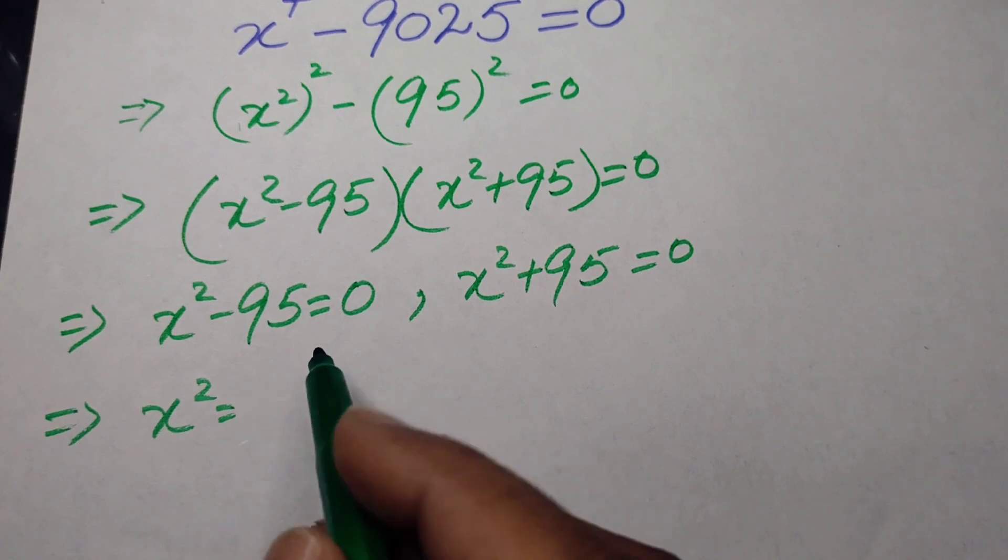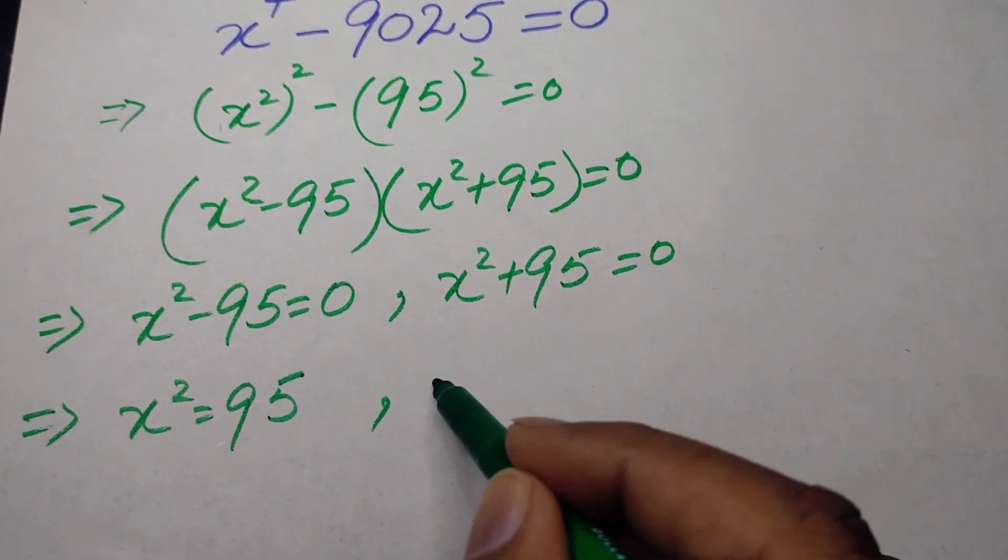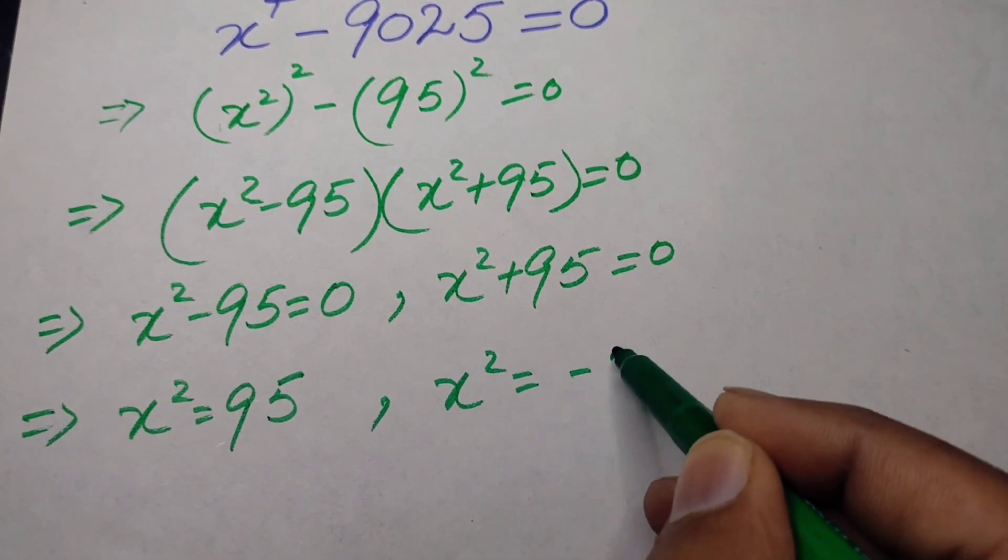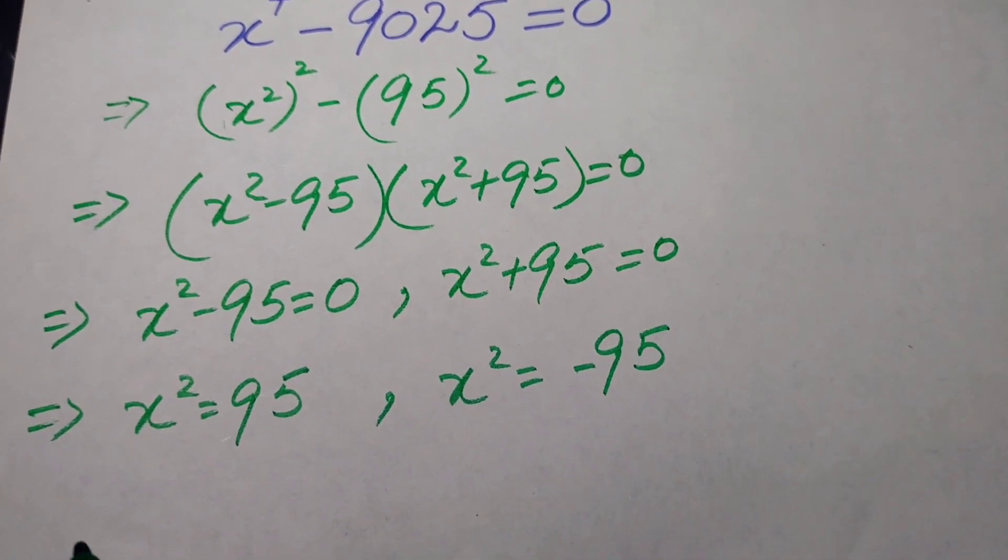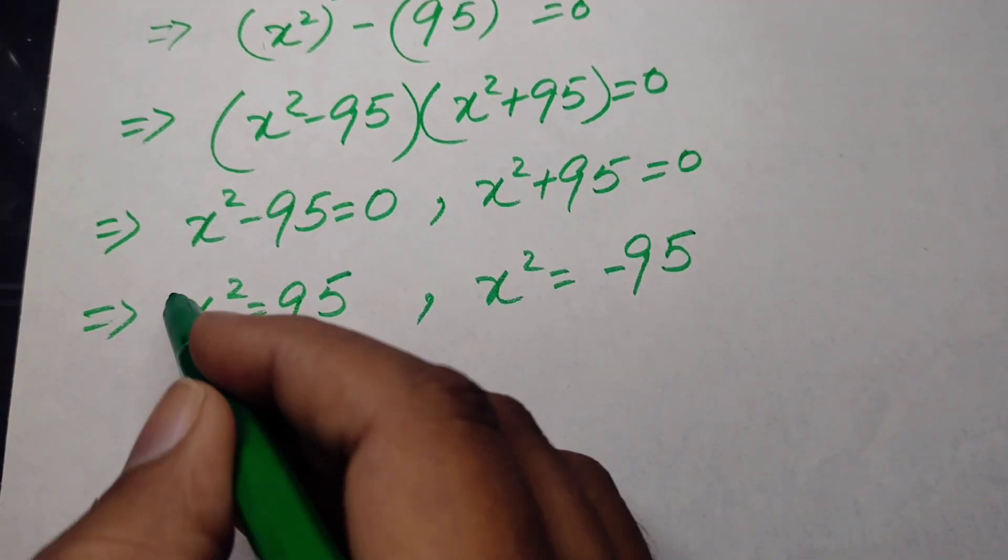After that we will take minus 95 to the right hand side and we will write x squared is equal to 95 and here we will write x squared is equal to negative 95.